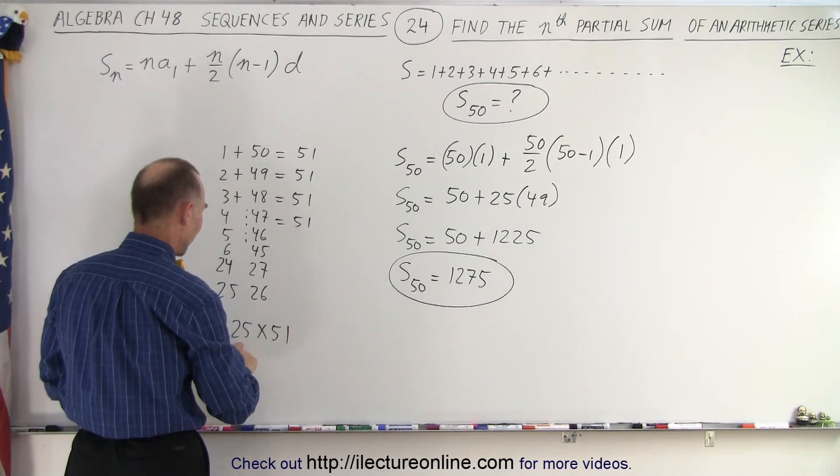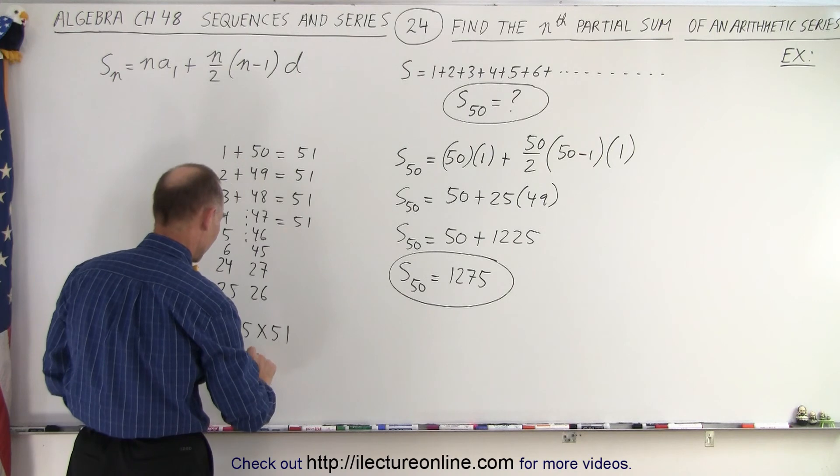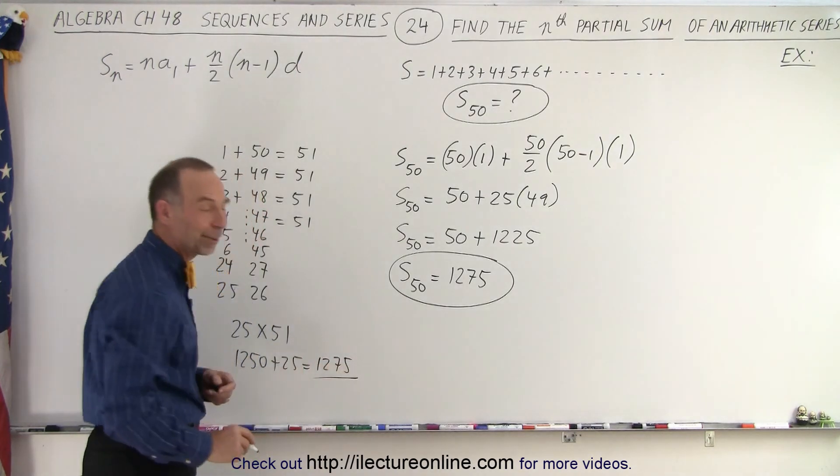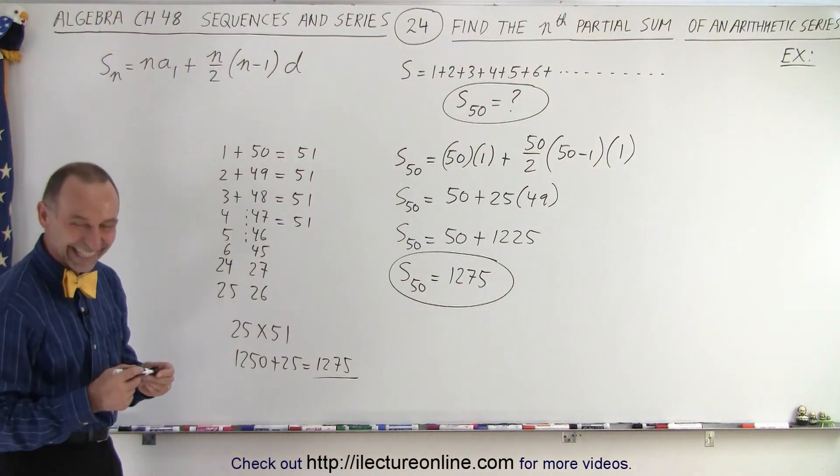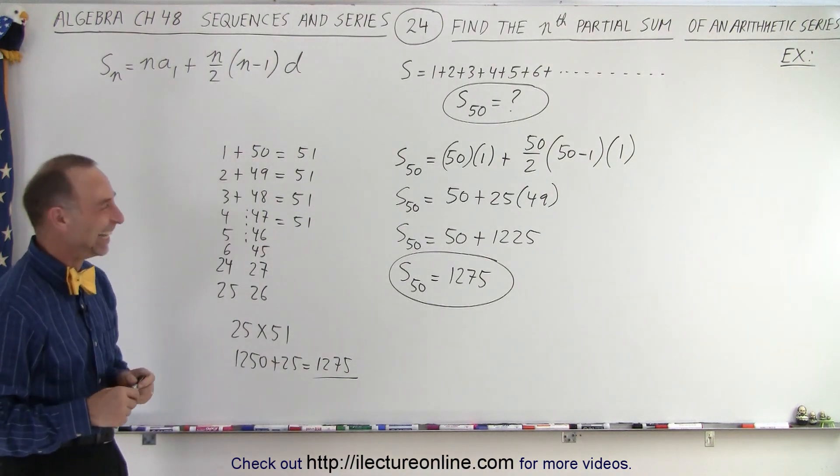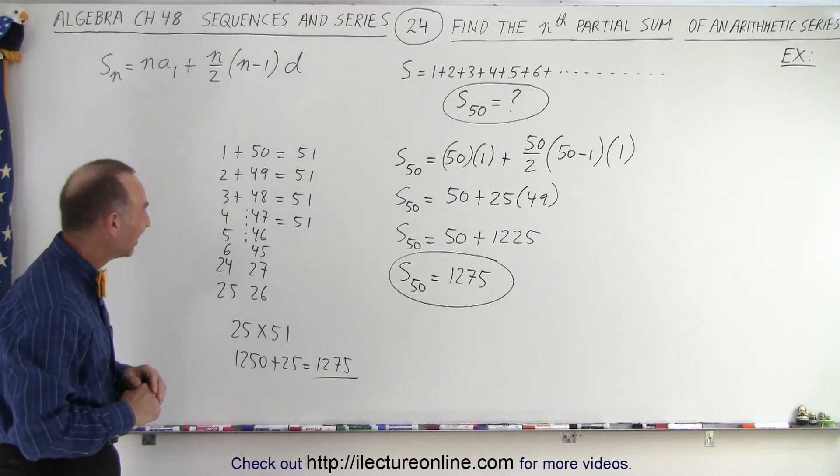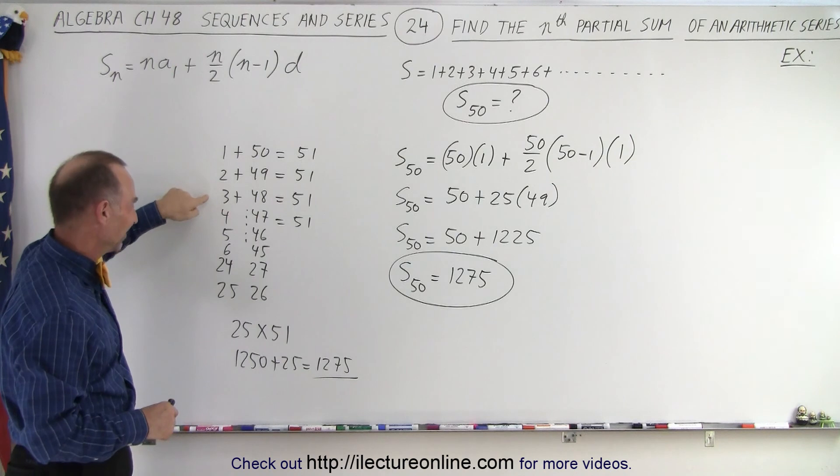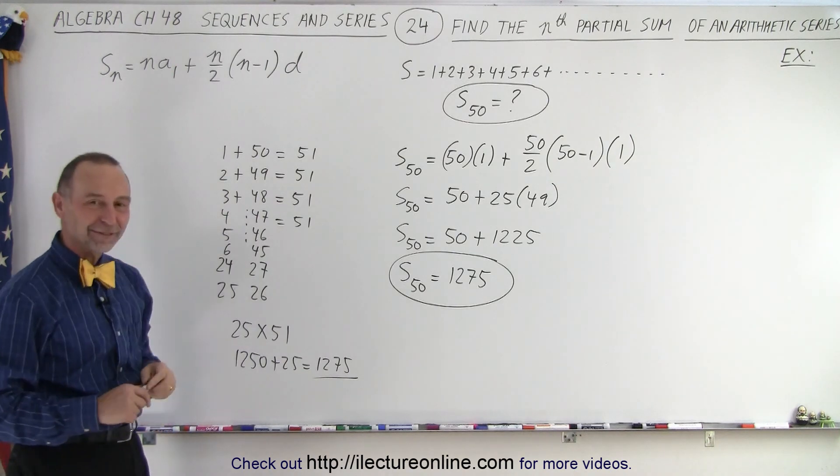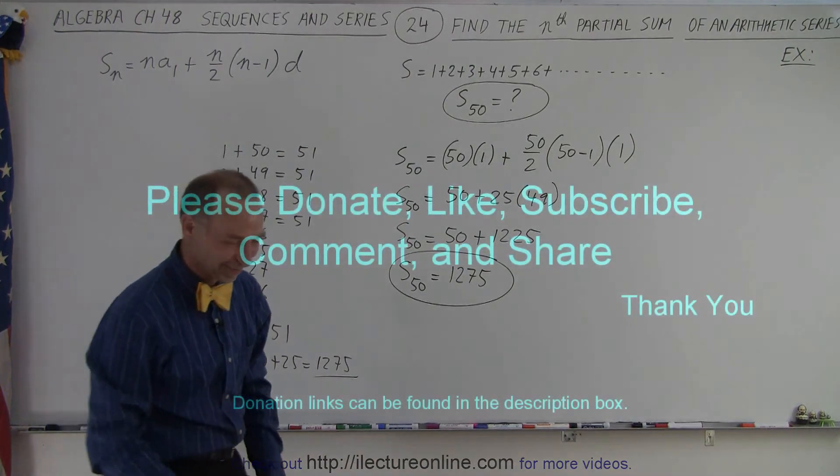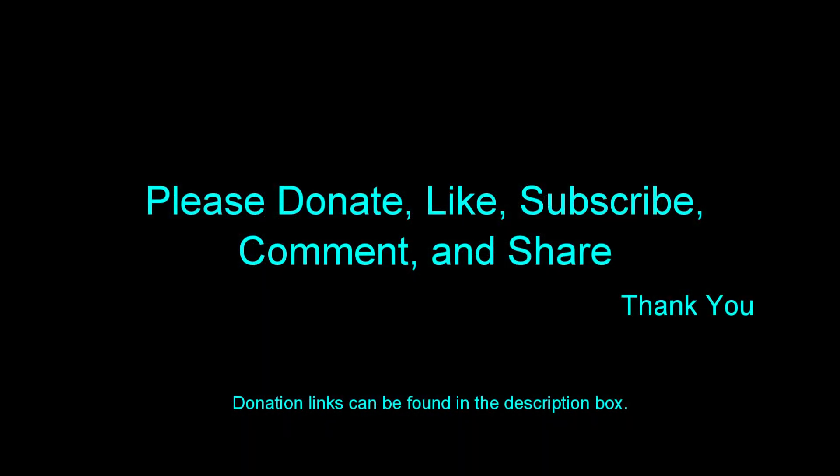So 50 times that would be 1,250. Plus 25 is 1,275. Yep, we did it correctly. Well, there's all kinds of ways to get to the same answer. This is nice, but this works with a little bit of effort. So we did it correctly. That's the correct number. Thank you.